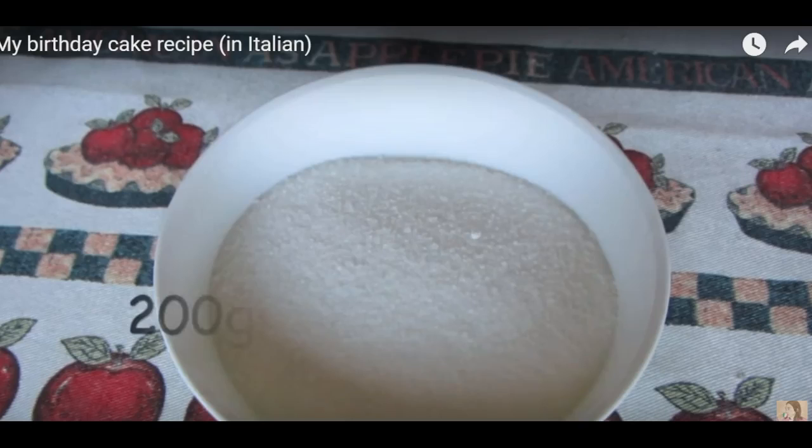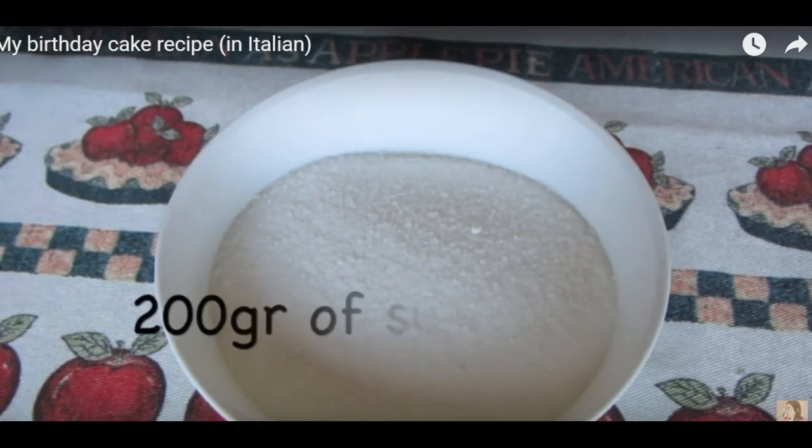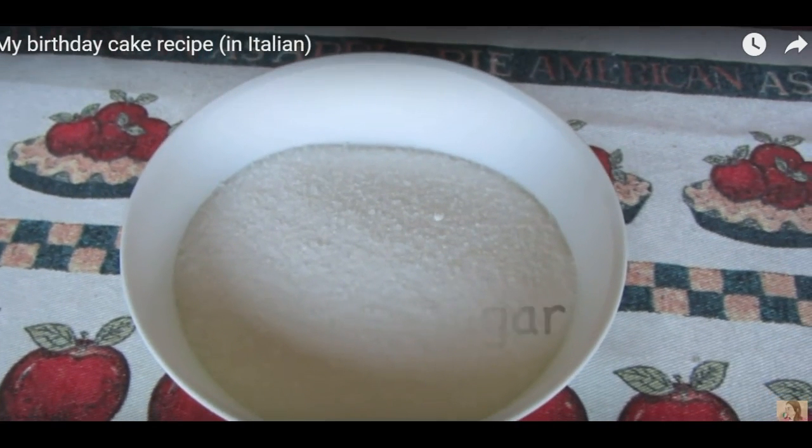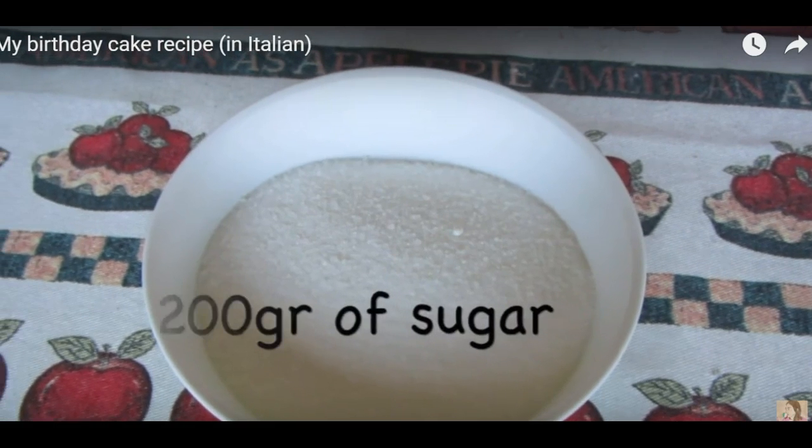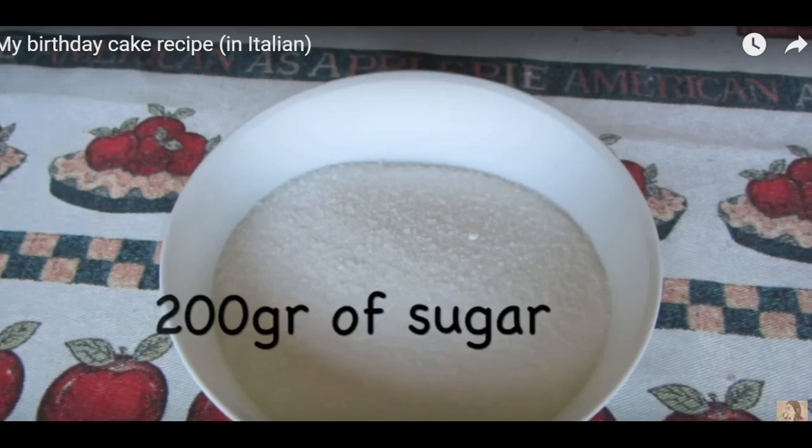In this recipe for a birthday cake, we are told that you will need 200 grams of sugar. But once again, it's not very common that we use grams in recipes in the United States. Is there any way we can convert it?